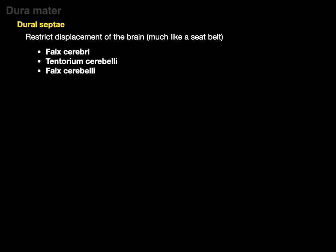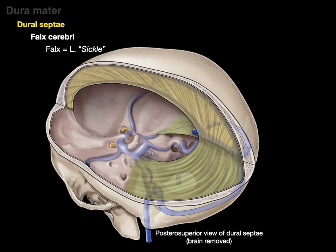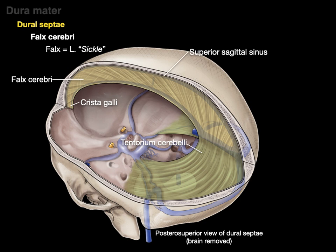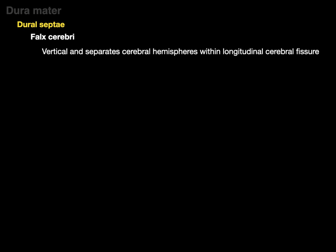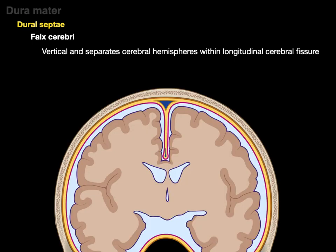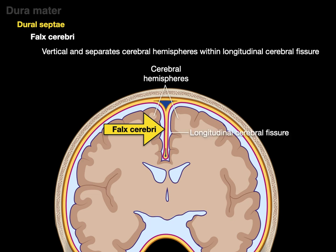The falx cerebri, the tentorium cerebelli, and the falx cerebelli are the three dural septae we're going to talk about. Falx is Latin for sickle. In this posterior superior view of the skull with the dural septae shown and the brain removed, there's our falx cerebri — and it does kind of look like a sickle. It courses anteriorly from the crista galli of the ethmoid bone all the way back and fuses with the tentorium cerebelli. On the very top is the superior sagittal sinus and on the bottom is the inferior sagittal sinus. The falx cerebri is vertical and it separates our cerebral hemispheres within the longitudinal cerebral fissure, with the corpus callosum at the very bottom.